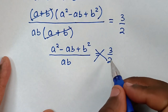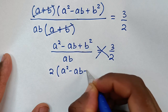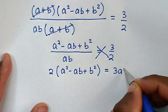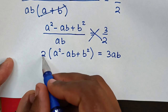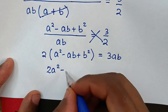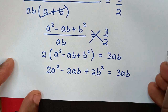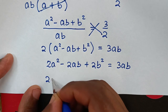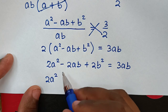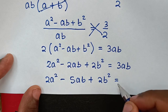We cross multiply: 2(a^2 - ab + b^2) = 3ab. Expanding the left side: 2a^2 - 2ab + 2b^2 = 3ab. Moving 3ab to the left side: 2a^2 - 5ab + 2b^2 = 0.